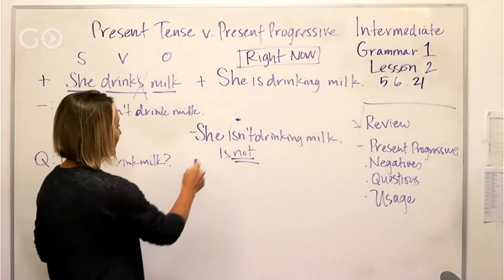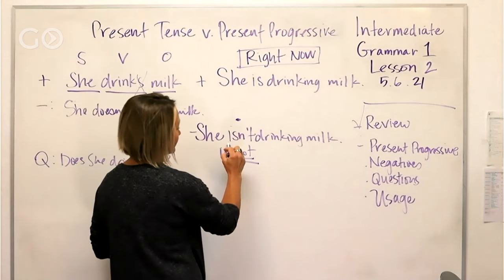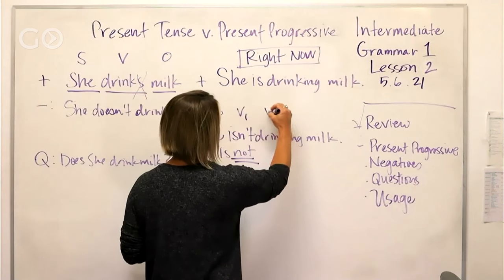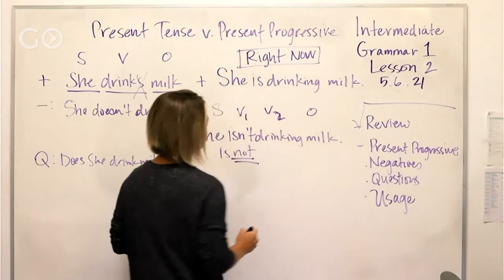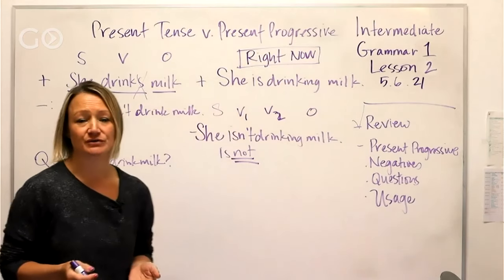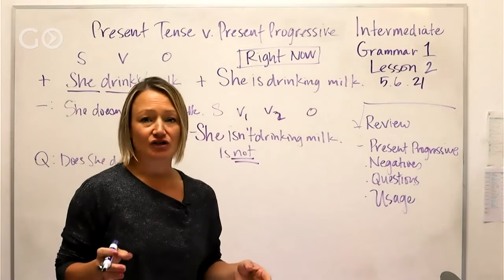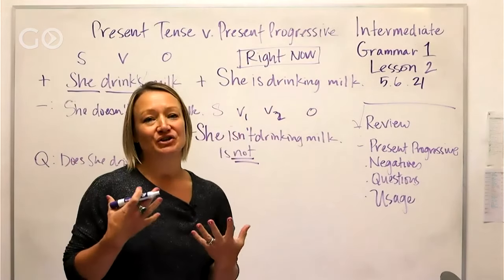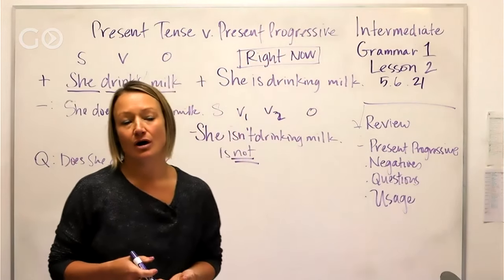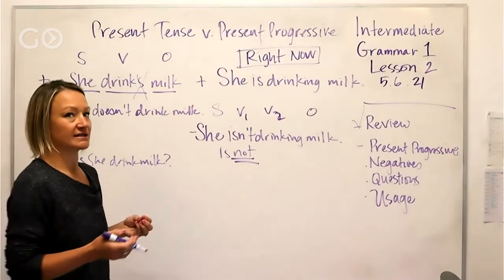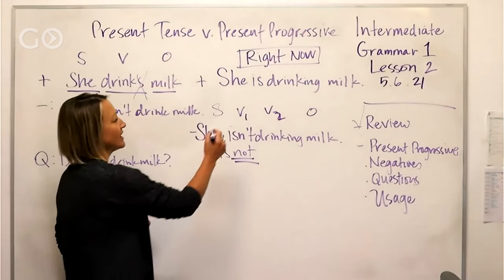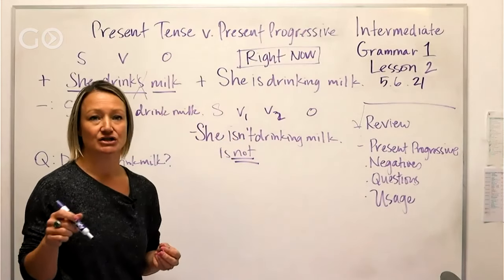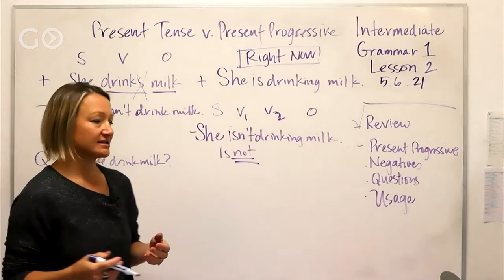You've got the subject, verb one, verb two, then your object. I like to point out those grammar structural pieces so it sinks in — always be noticing how English has this SVO organization to the majority of its sentences.